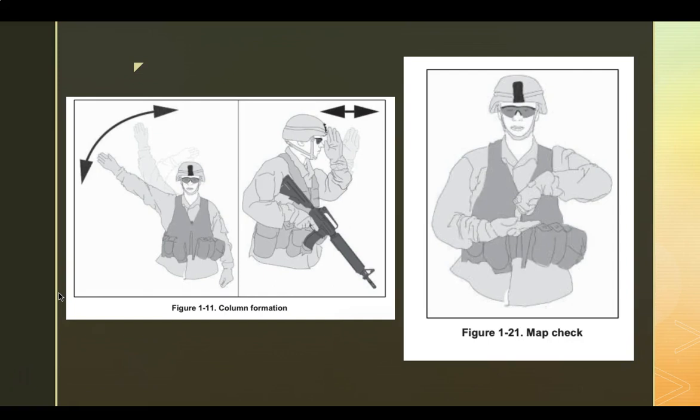Map check. As you can see, he's pointing to the palm of his hand, which shows that obviously the PL or one of the squad leaders who he designated as a map keeper will have to check the map and take a break to make sure that they're on course for mission.